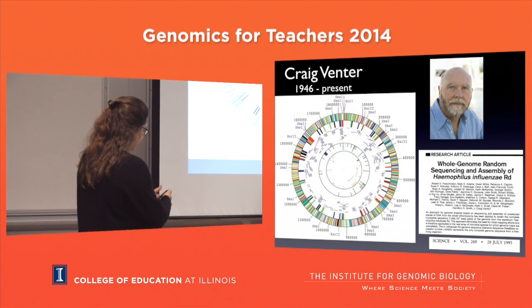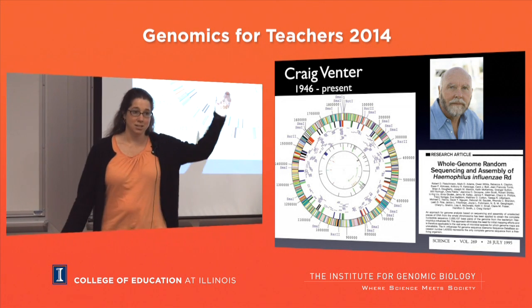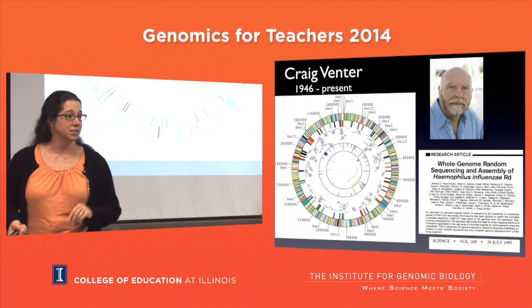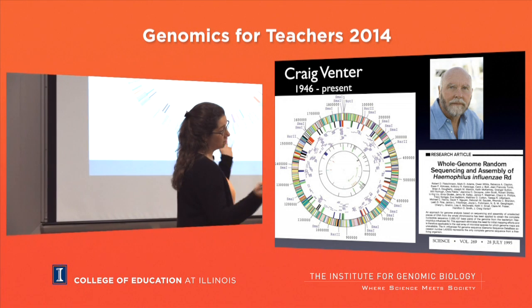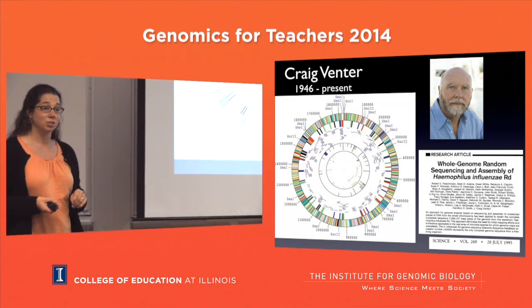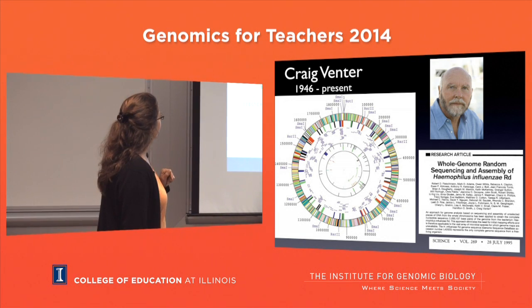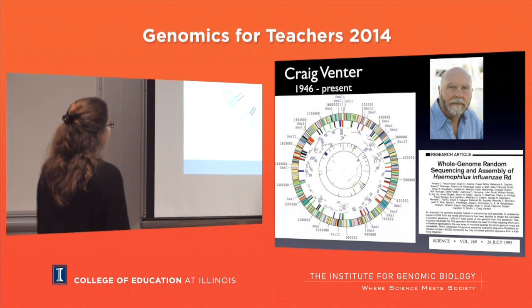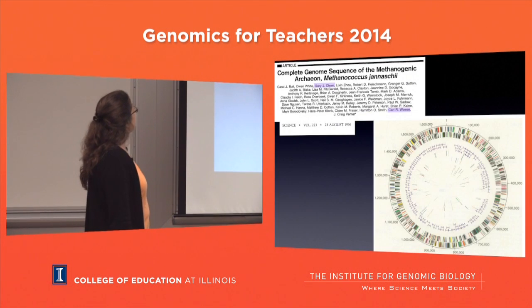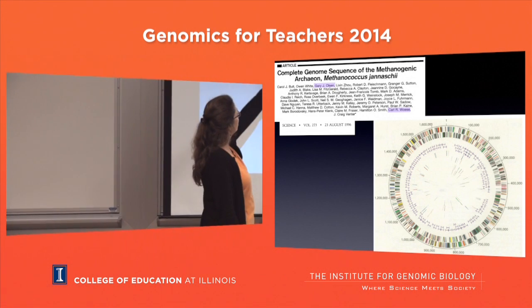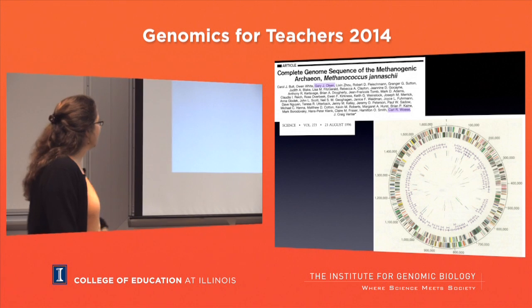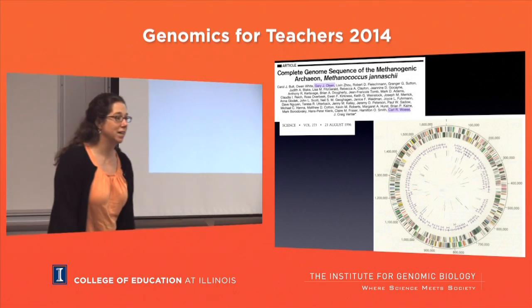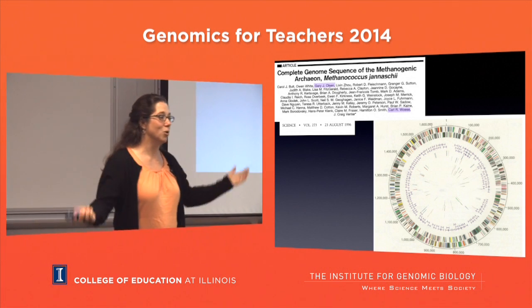Craig Venter did shotgun sequencing of the human genome - it is his genome and his dog that were first sequenced. He is now sequencing the ocean, going out taking DNA off his sailboat from different places and depositing it in the database - crashing the database with the amount of new sequences. He published the first bacterial genome using the shotgun sequence method in 1995. Soon after came the first archaeal genome in 1996. Gary Olson and Carl Woese, both at the University of Illinois, were on this genome - another methanogen, Methanococcus jannaschii, pulled out of deep hydrothermal vents.